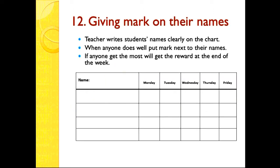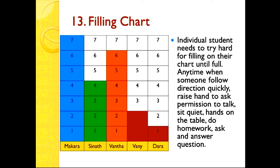Number twelve: give marks next to names. The teacher writes student names clearly on a chart. When anyone does well, put a mark next to their name. Whoever gets the most marks by the end of the week will get a reward. You can do this individually — you can see the chart shows names and marks from Monday to Friday.